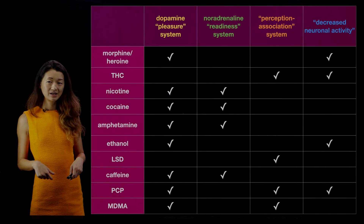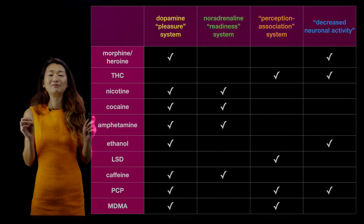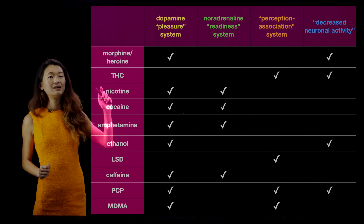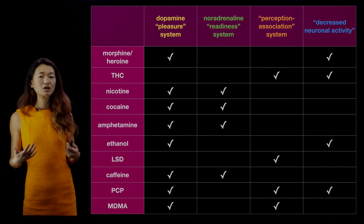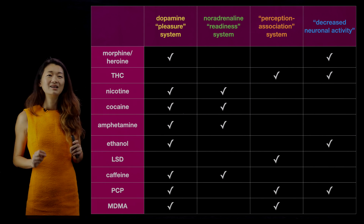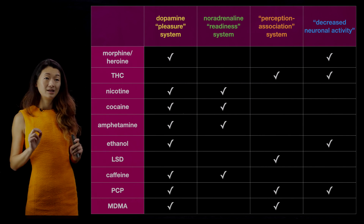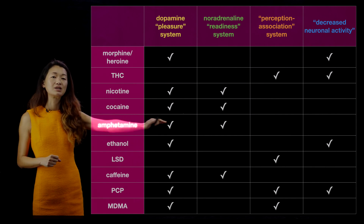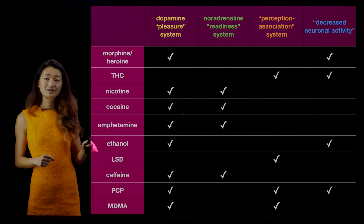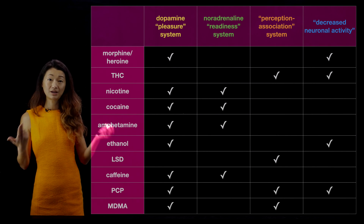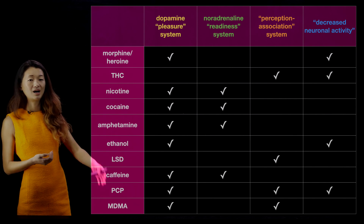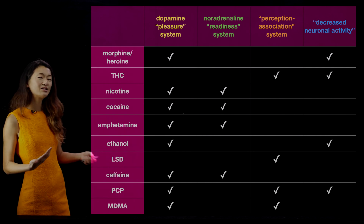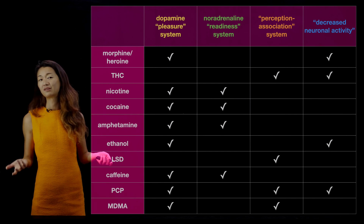As a short summary — don't take this too literally, it's an attempt at oversimplifying very complicated things — these are some of the recreational drugs we talked about and the systems they affect: the dopamine pleasure system, a noradrenaline readiness system, a perception association system, and ones that generally decrease neuronal activity. Ethanol falls in that last category — it's a very small molecule (two carbons, an OH group, and a couple of hydrogens), so unlike the other molecules, it's not very specific and has a generalized effect on the nervous system, generally decreasing neural activity.